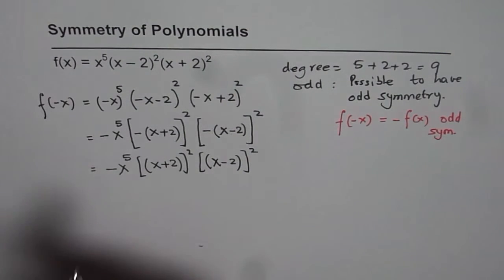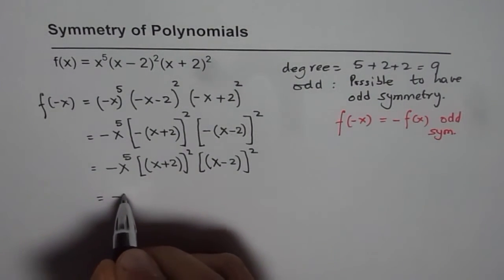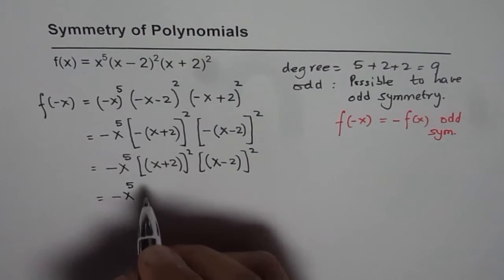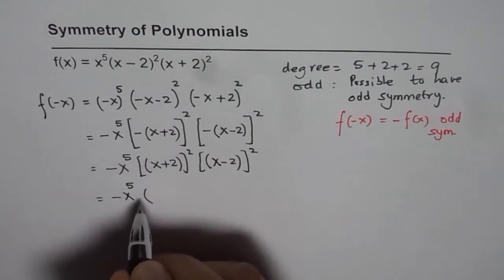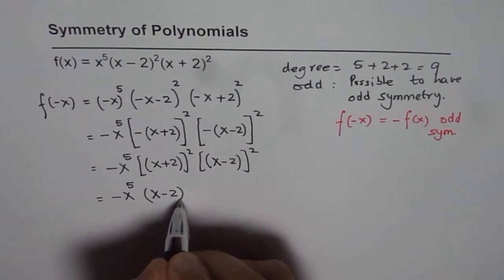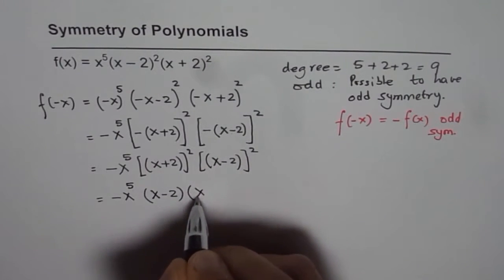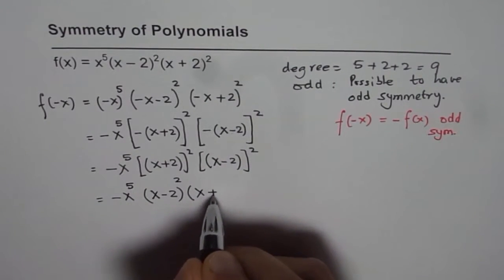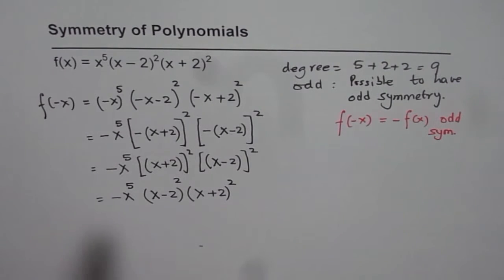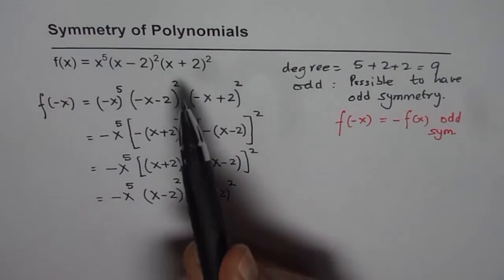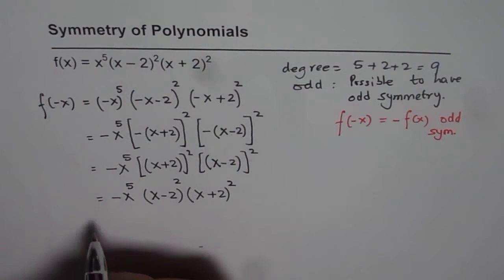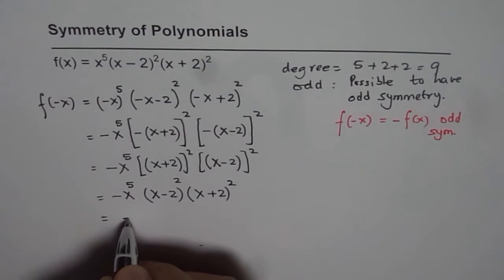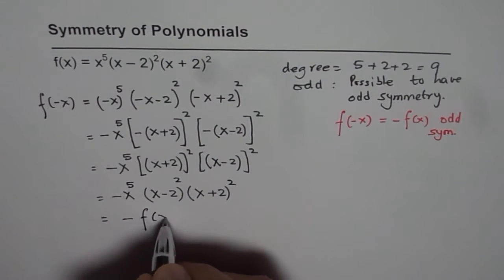Now we can rearrange it. So we have -(x^5) times, I am writing this first, (x - 2)^2 times (x + 2)^2. As you can see, x^5, (x - 2)^2, (x + 2)^2 with a negative sign. So f(-x) is indeed equal to -f(x).